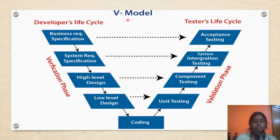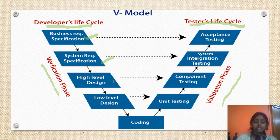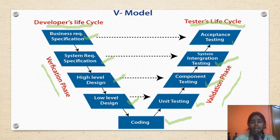This is the diagram for the V model. It has a developer's life cycle and a tester's life cycle. In the developer's cycle, we have the verification phase, and in the tester's life cycle, we have the validation phase. The first phase in the developer's life cycle is requirement specification, then system requirement specification, then high-level design, then low-level design. This leads to coding. From coding, in the tester's life cycle, it goes to unit testing, component testing, system integration testing, and acceptance testing.